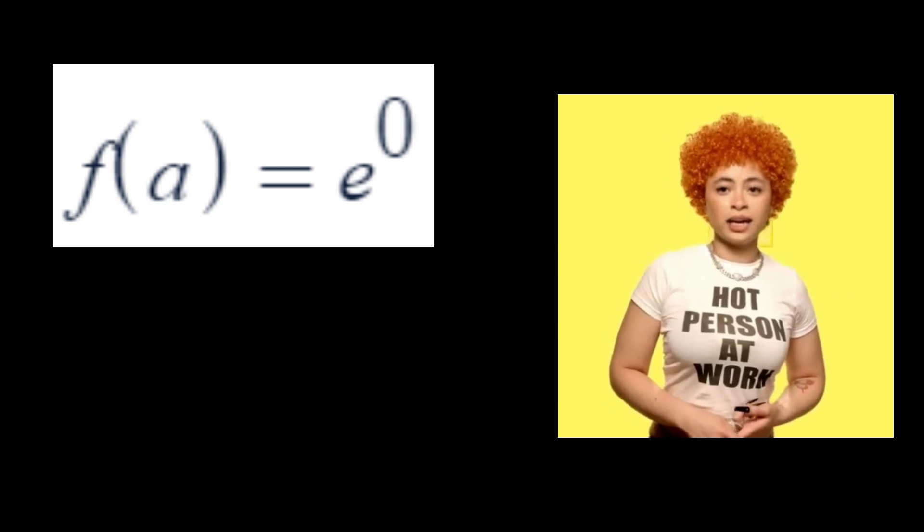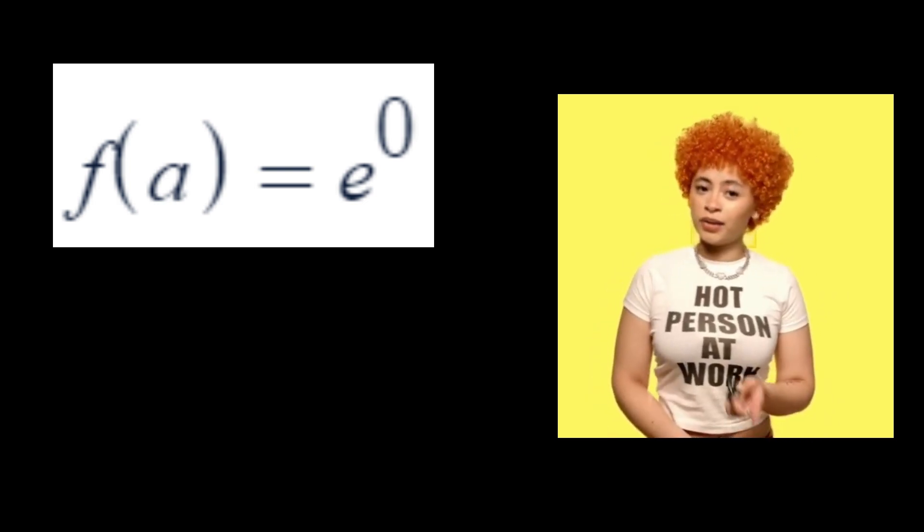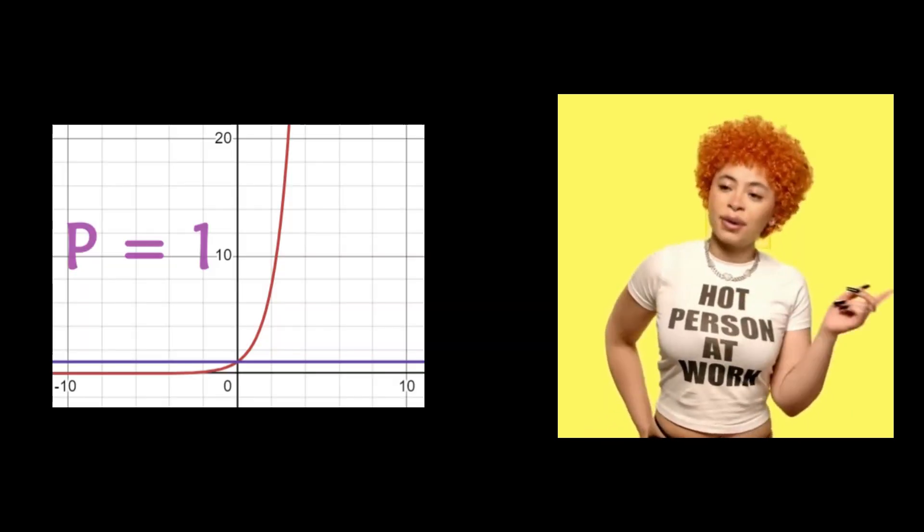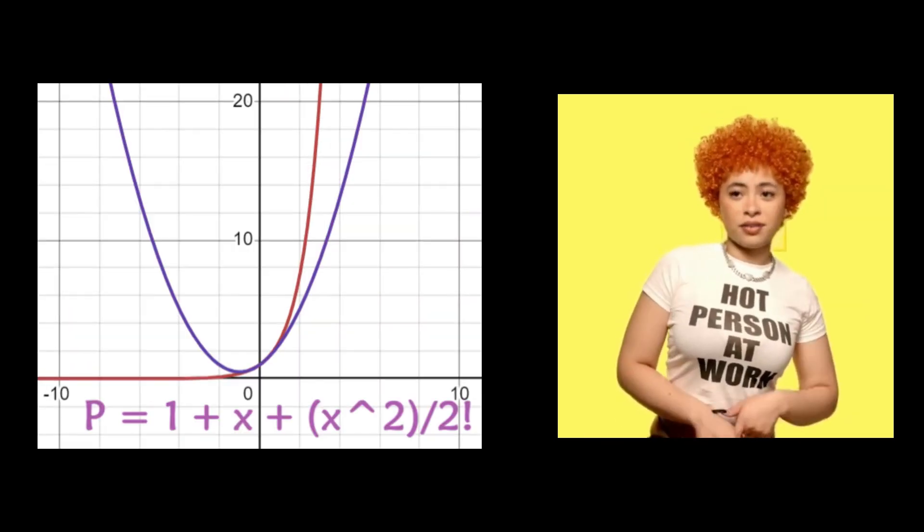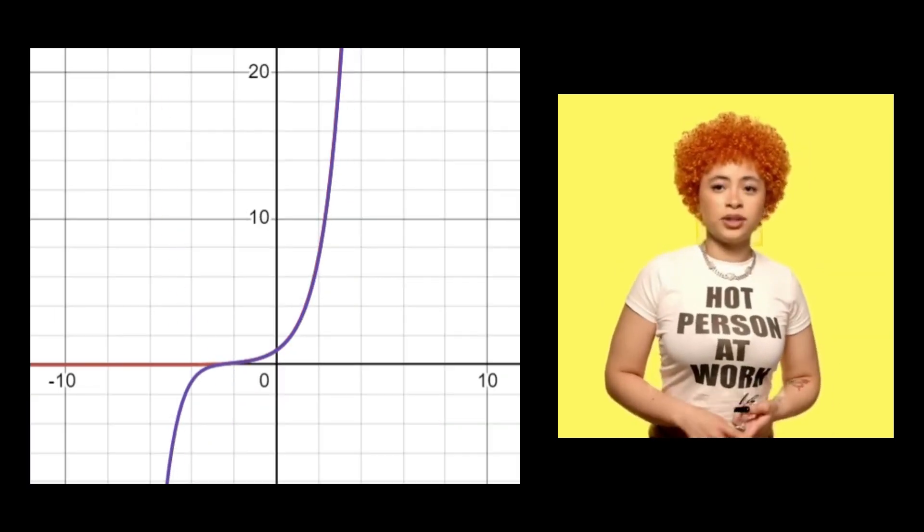So using that formula, f of a is e to the zero, and this is true for any derivative at a. e to the zero is 1. We can just pump out terms now. The polynomial is 1 plus x plus x squared over 2 factorial plus x cubed over 3 factorial, and so on. Oh, that was light.